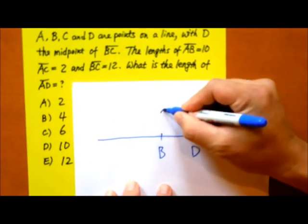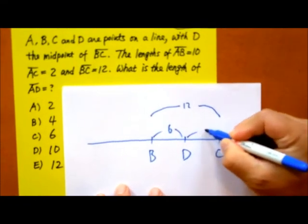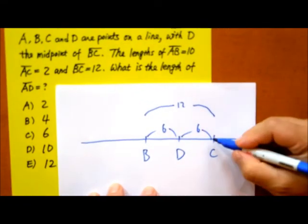12. So that means this is 6 and this is 6, since D is a midpoint.